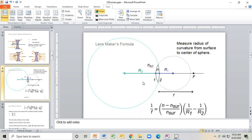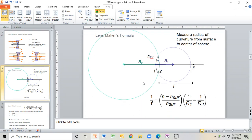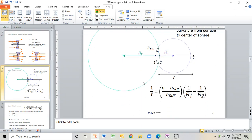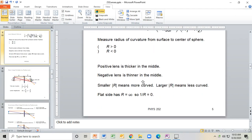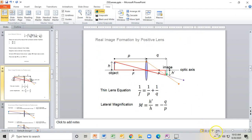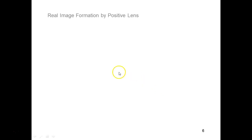Last time we talked about the lens maker's formula, which helps you design a lens with a specific focal length. But let's suppose that now we want to form an image with this lens. Let's make a positive lens. We want to make sure we know how to do a ray trace with lenses, so this will be our starting point.